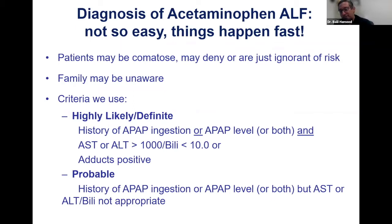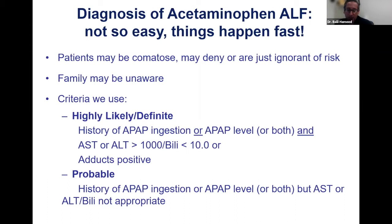Patients with acetaminophen overdose usually have ALT and AST greater than 1000, but the bilirubin is almost always less than 10 unless there is a different etiology. We are working on new assays — APAP-adducts — that we can measure in urine or blood, but these are only in research and studies are ongoing for future availability.